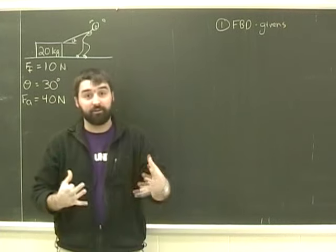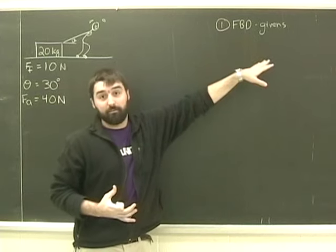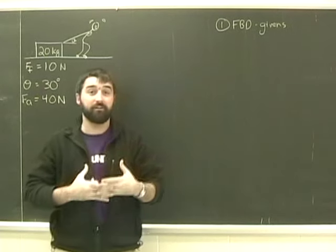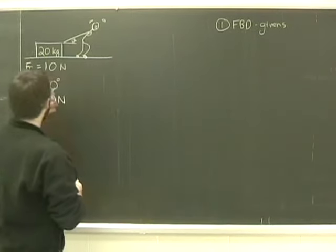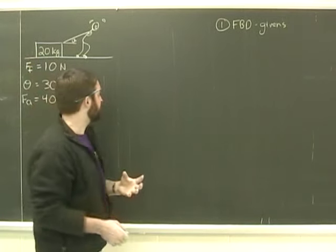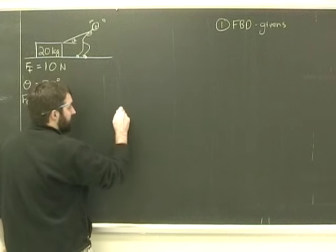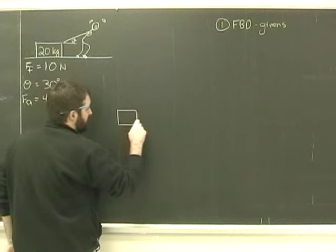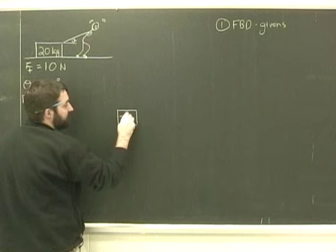The first step, as always, is to write your givens, but we're also going to draw our free body diagram. Free body diagram givens I want you to think of as basically the same thing. So I've written down some of the information, we've already looked at the free body diagram of the person pulling the box. So I like to draw my free body diagram as a box, and I'm going to put 20 kilograms inside it.